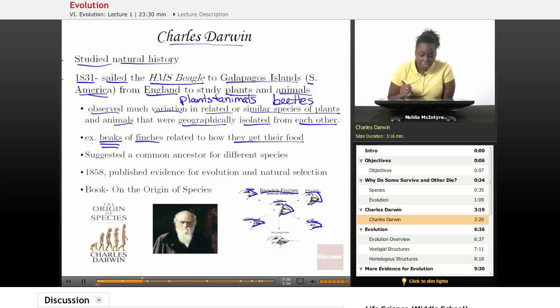And so that definitely caused him to want to study more about why animals of the same species would have different variations or would evolve and adapt different structures to help them to survive. Over time he studied different organisms, and he suggested that there may be a common ancestor for different species because of evolution.